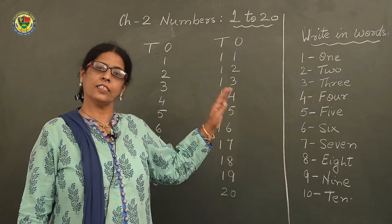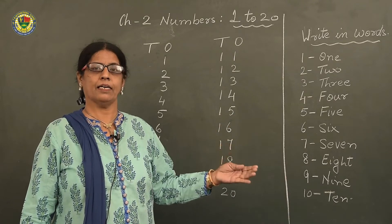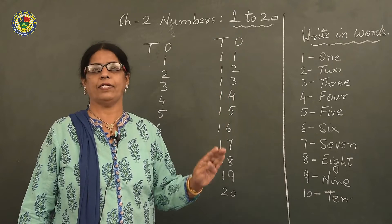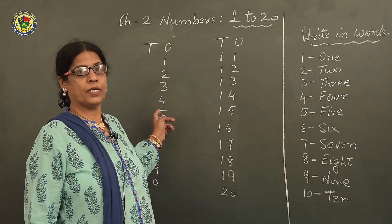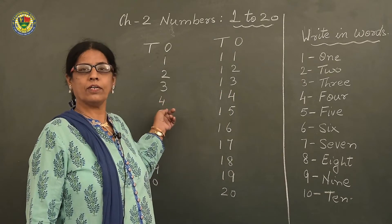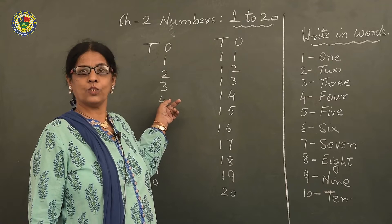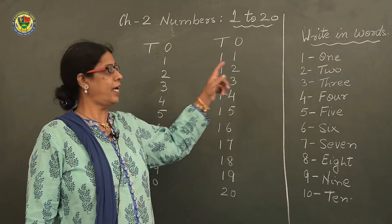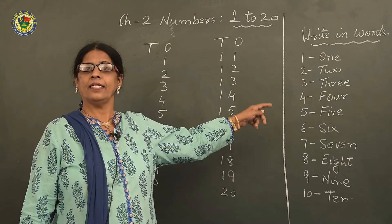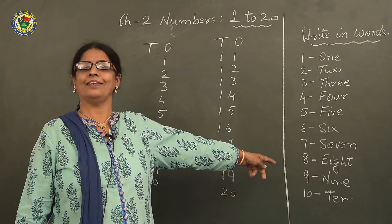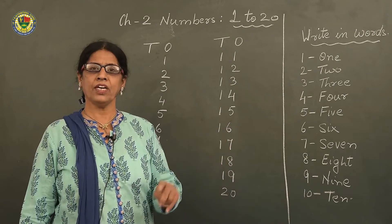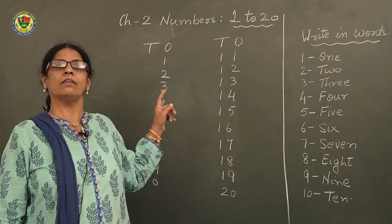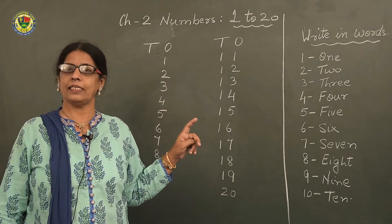Again next time when I will come, I will write the spellings of 11 to 20. But today, on the first page you will write 1 to 20 in figures and 1 to 10 in words — you will write twice.